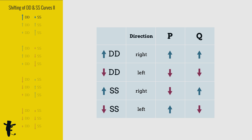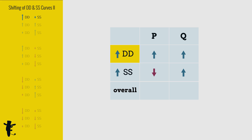What happens when both demand and supply increase? An increase in demand causes quantity to increase. An increase in supply causes quantity to increase as well. Overall, quantity increases.